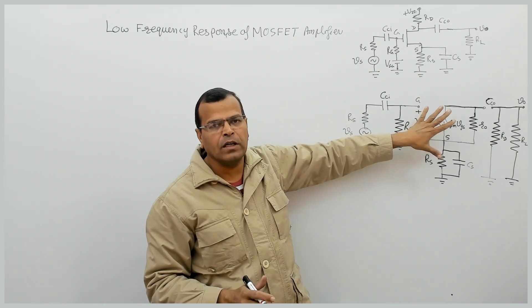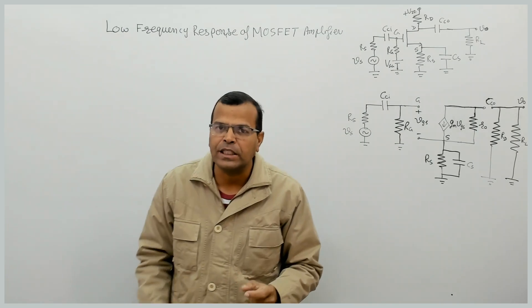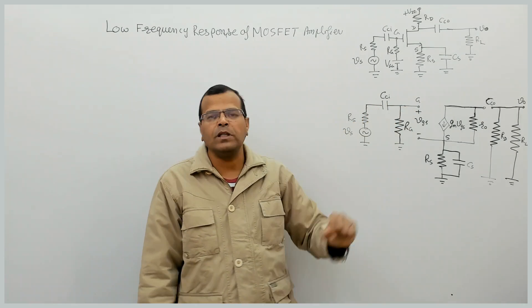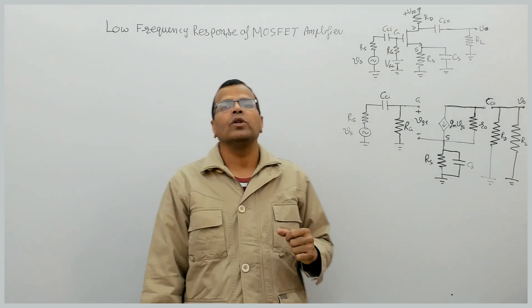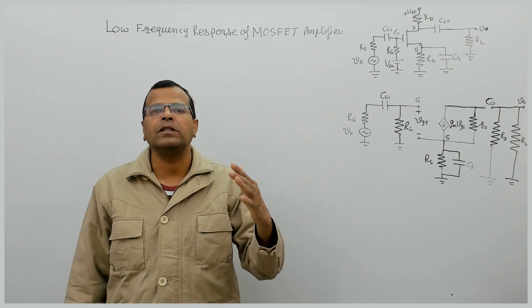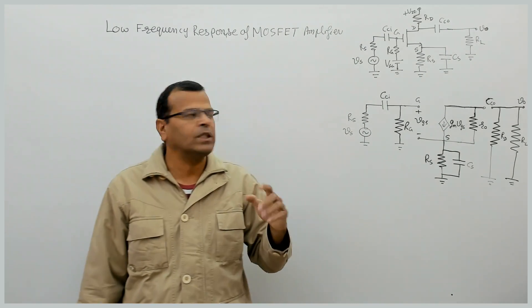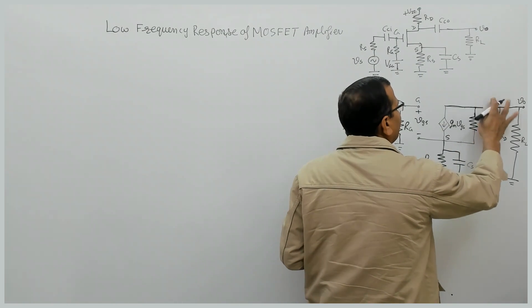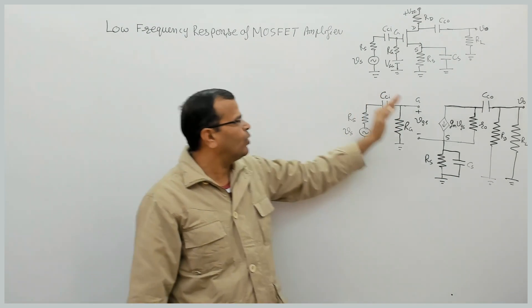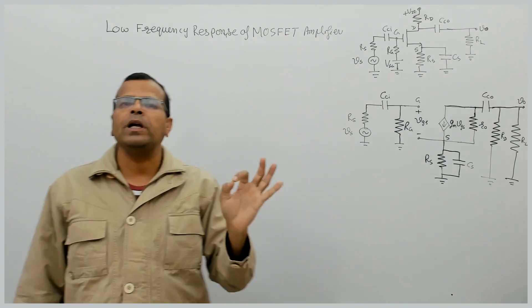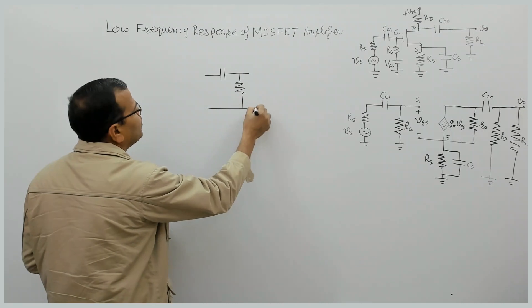Here we have the AC equivalent circuit of this amplifier. We will try to find the cutoff frequencies individually — due to the input coupling capacitor, then the output coupling capacitor, and then the source bypass capacitor one by one. When we consider one capacitor at a time, the remaining capacitors will be replaced by short circuits. How can we say it is behaving like a high pass circuit? Whenever there is a capacitor in series with the input source or output terminal, that circuit is simply a high pass circuit. Recall the high pass RC circuit response.